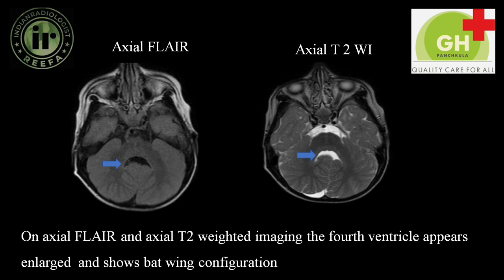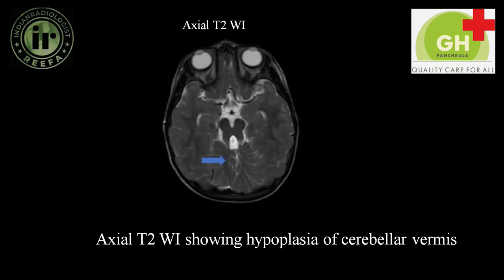On axial FLAIR and axial T2-weighted images, the 4th ventricle appeared enlarged and showed a bat-wing configuration. On axial T2-weighted imaging, hypoplasia of the cerebellar vermis was noted.